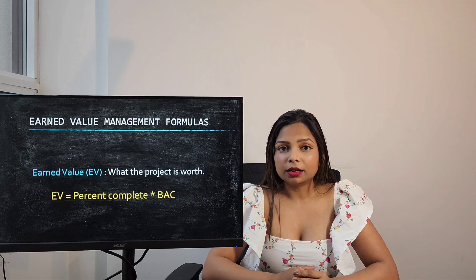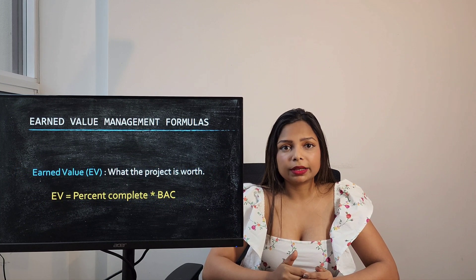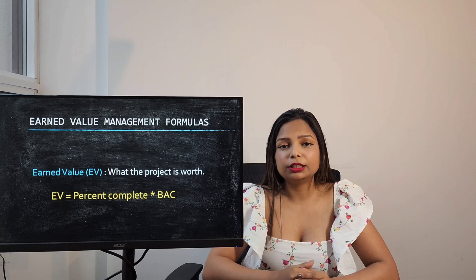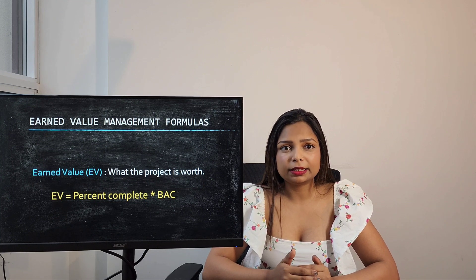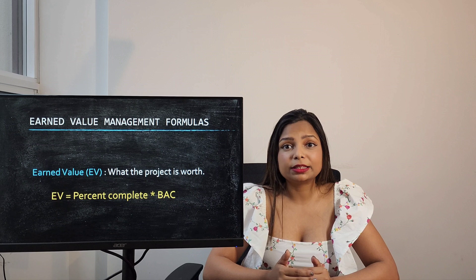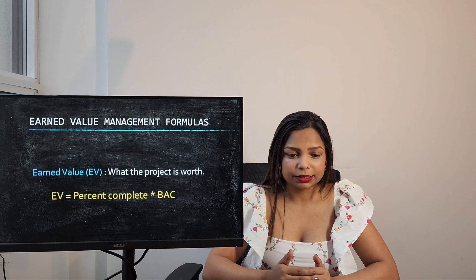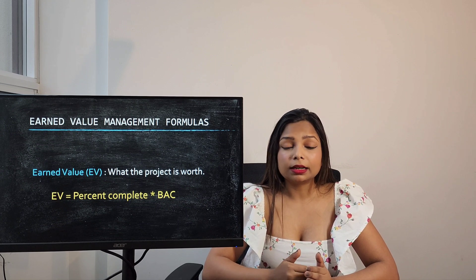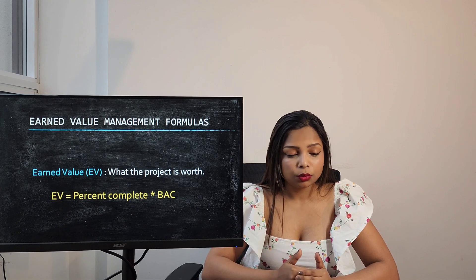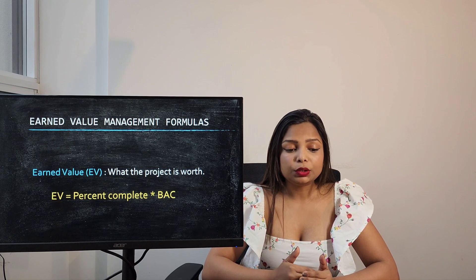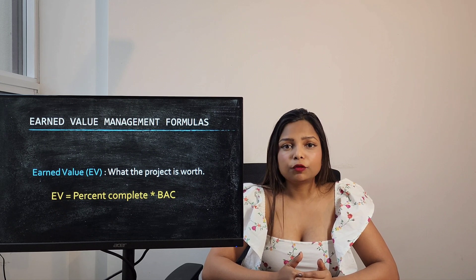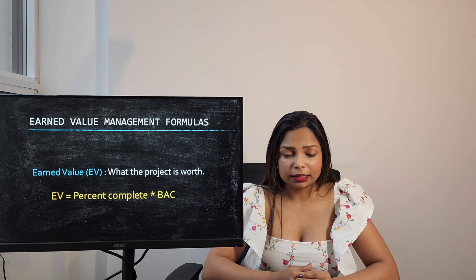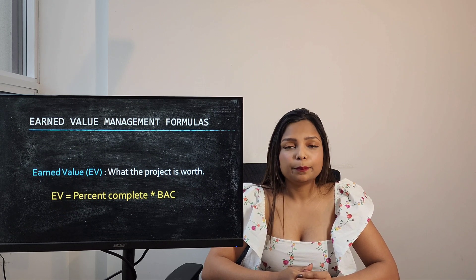The next term is Earned Value. Earned Value is the approved budget for the project that was actually completed by the specified date. To calculate Earned Value you need to know the percentage complete and then multiply that with BAC.